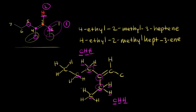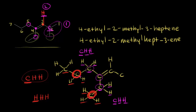We go to the next carbon in each chain. The top carbon is bonded to: carbon, hydrogen, hydrogen. The bottom carbon is bonded to: hydrogen, hydrogen, hydrogen. Finally, we have our first point of difference — we're comparing a carbon to a hydrogen. Carbon has the higher atomic number, so the top group gets higher priority. That means the propyl-type chain gets number one, and our ethyl group gets number two.